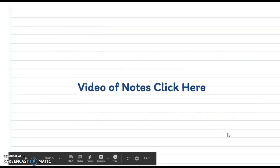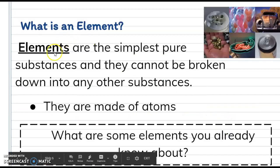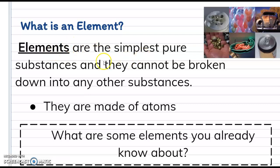So what is an element? Elements are the simplest pure substances and they cannot be broken down into any other substances. So they are made of atoms and those atoms are special to that element. They have a special number of electrons depending on the element.